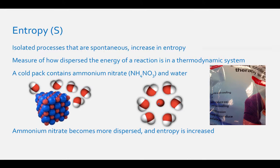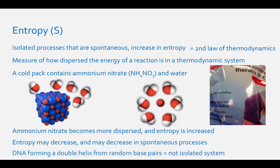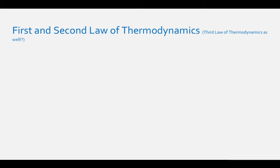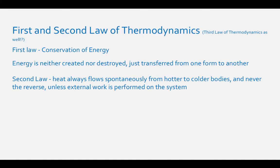The second law of thermodynamics states that the entropy of an isolated system always increases with a spontaneous process. Sometimes entropy will decrease in a spontaneous process — in these cases the system is not isolated, as is the case with DNA forming a double helix from random base pairs. The second law of thermodynamics pertains to the direction of natural processes. For example, heat always flows spontaneously from hotter to colder bodies and never the reverse, unless external work is performed on the system. Or, the entropy of an isolated system always increases.